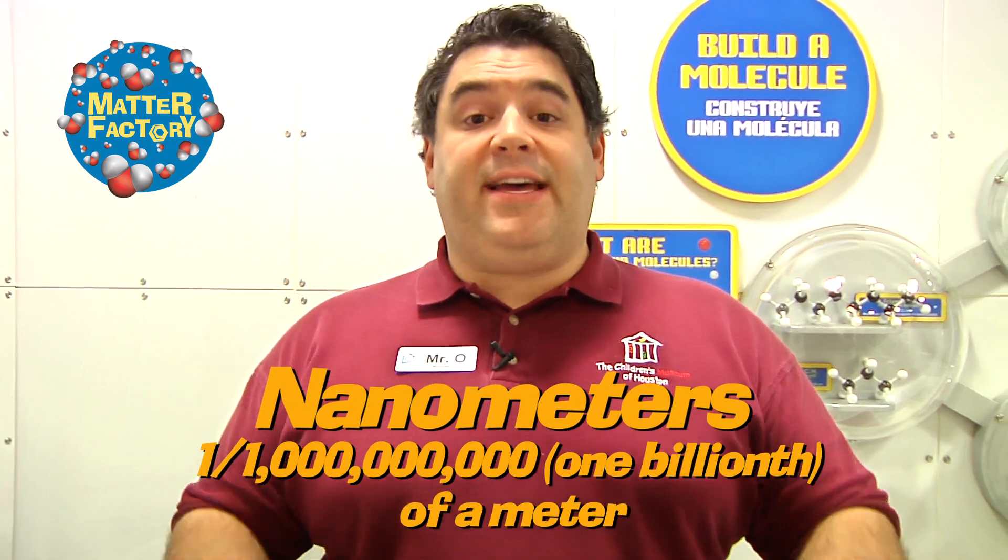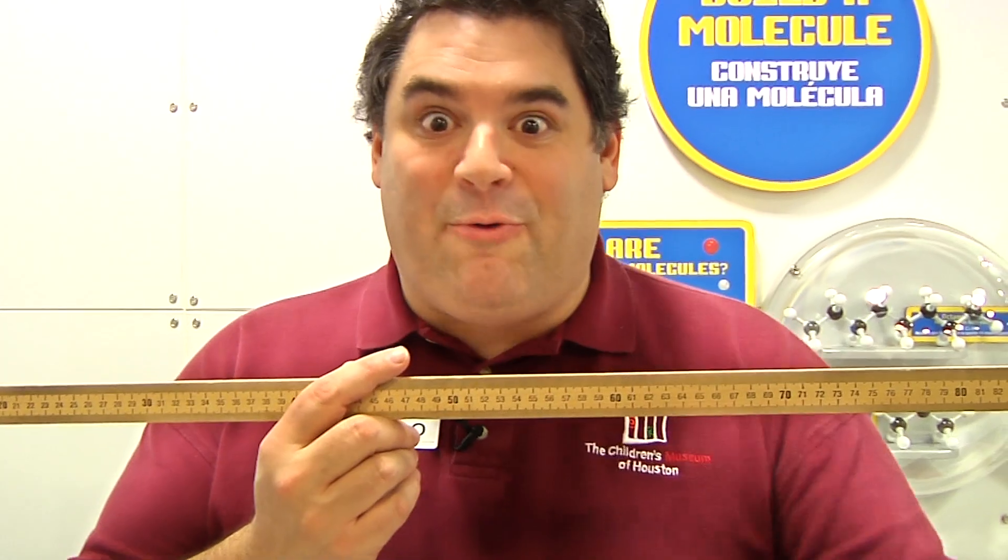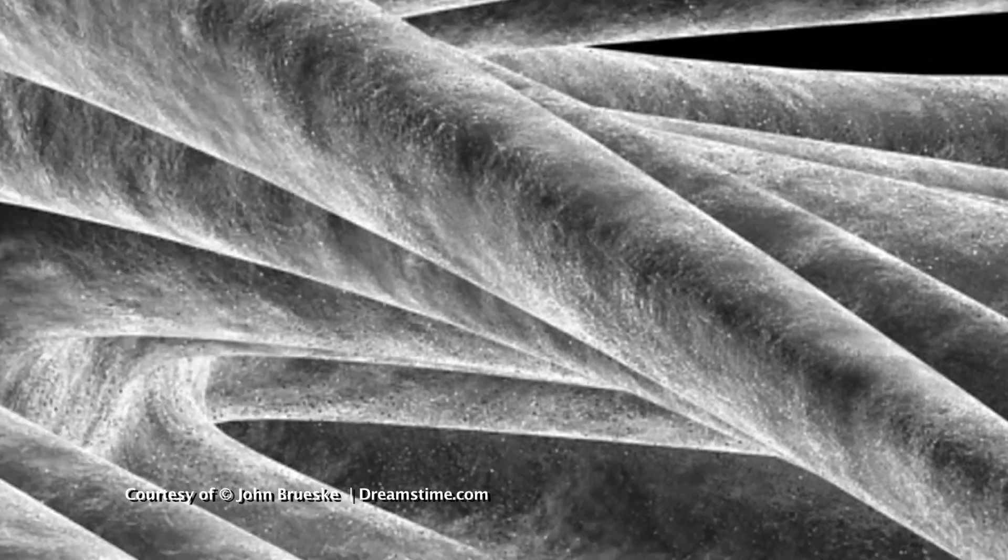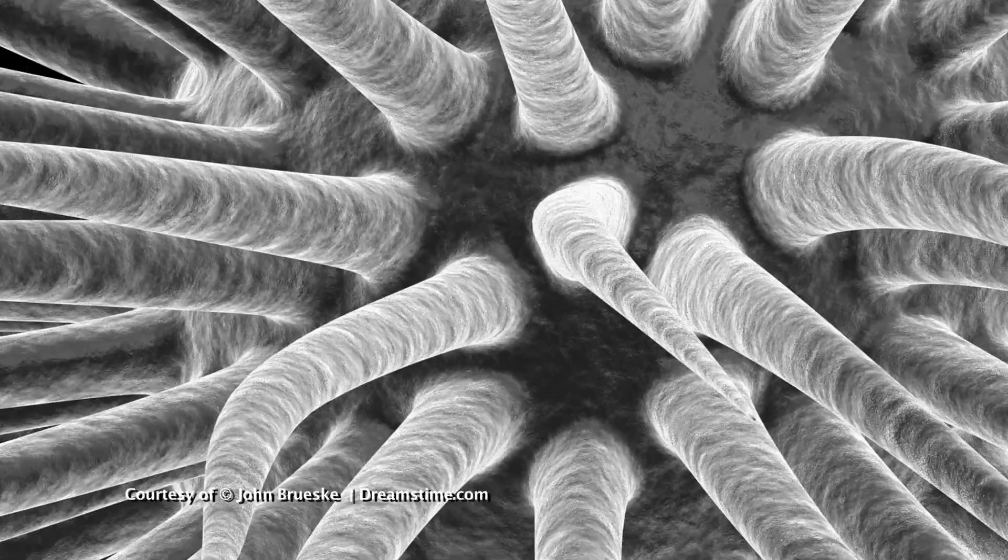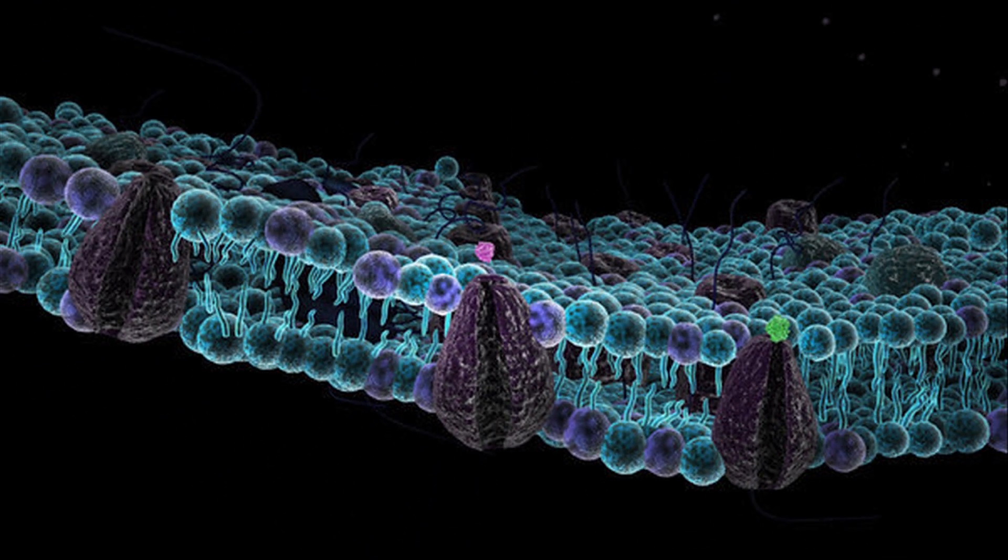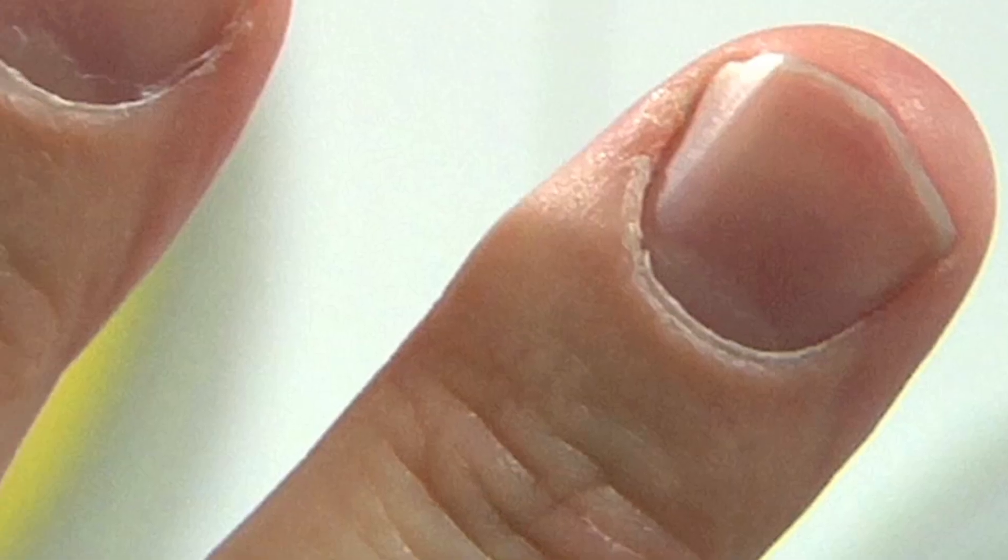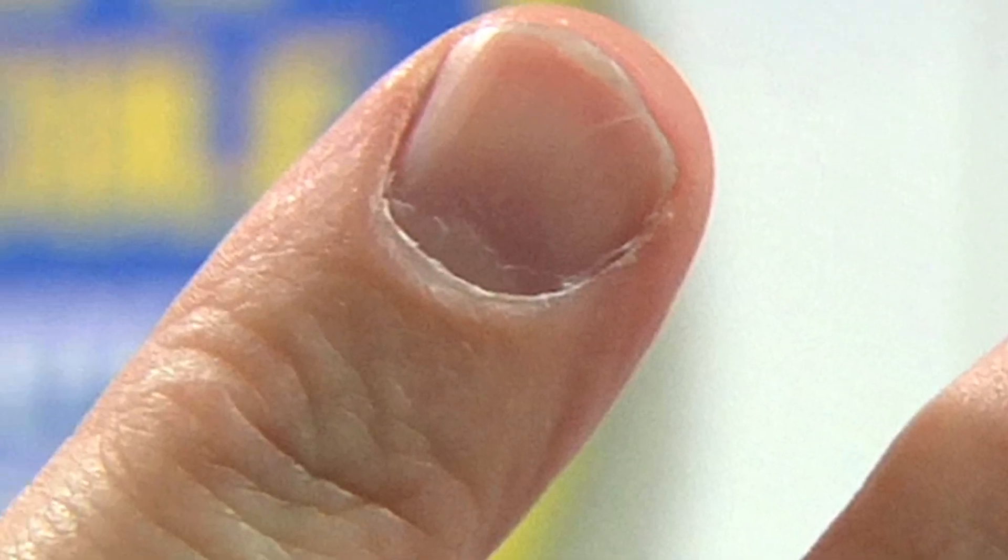When we talk about nanoparticles, we're talking about things that are very, very small. Nanometers in size. A nanometer is a billionth of a meter. This is a meter stick. If I broke this into a billion pieces, that would be a nanometer. To give you an idea about how small this is, a virus is about 70 nanometers long. A cell membrane is 9 nanometers thick. DNA is about 2.5 nanometers wide. And fingernails grow at about 1 nanometer every second.